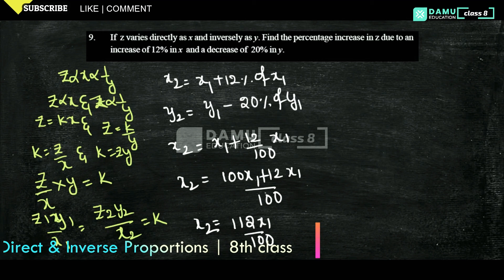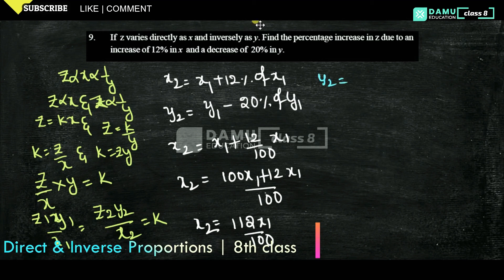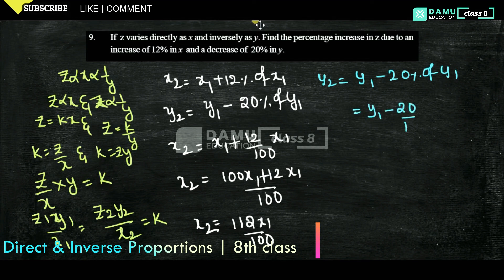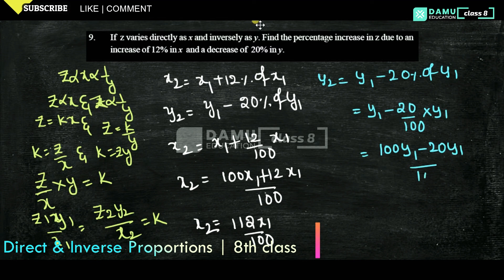y2 equals y1 minus 20% of y1, that is y1 minus (20/100)·y1, which gives us 80·y1 divided by 100. So x2 equals 112·x1/100 and y2 equals 80·y1/100.